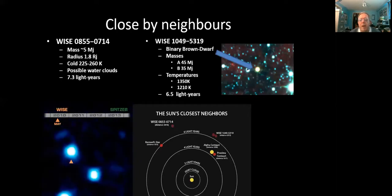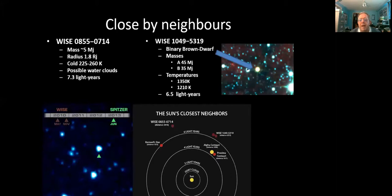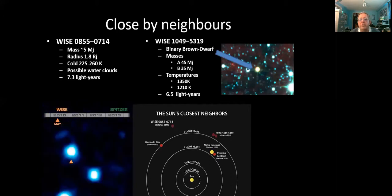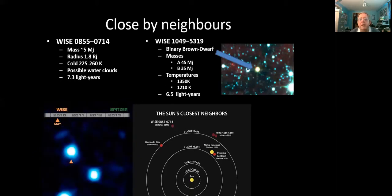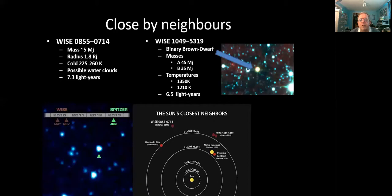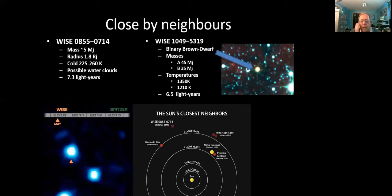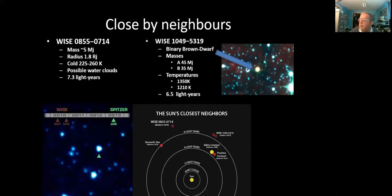And you can see the little map of the Sun, the Earth, and Alpha and Proxima Centauri system at just over four light years. Barnard's star, a red dwarf at six light years. And then we've got these other objects that are not that far away. Too far away to be the Nemesis object though.